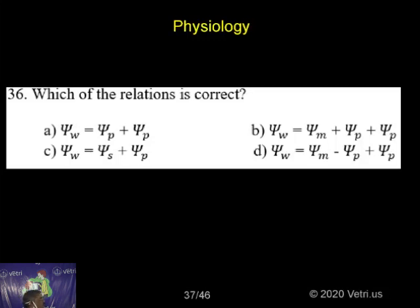So C is the correct answer. Phi of water potential is equal to phi of solute plus phi of pressure.